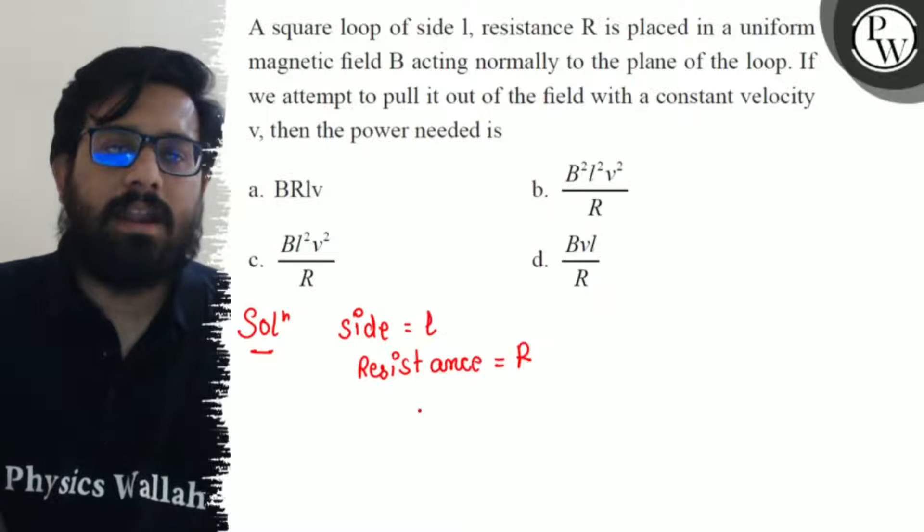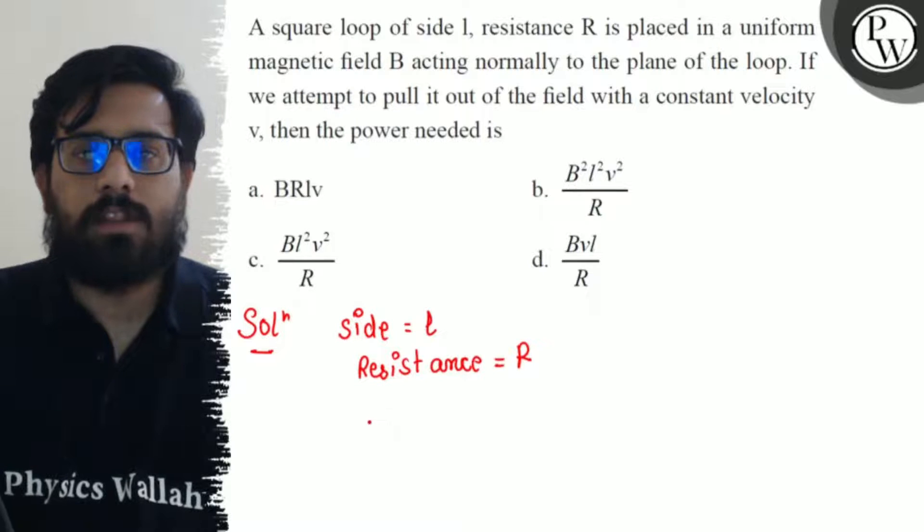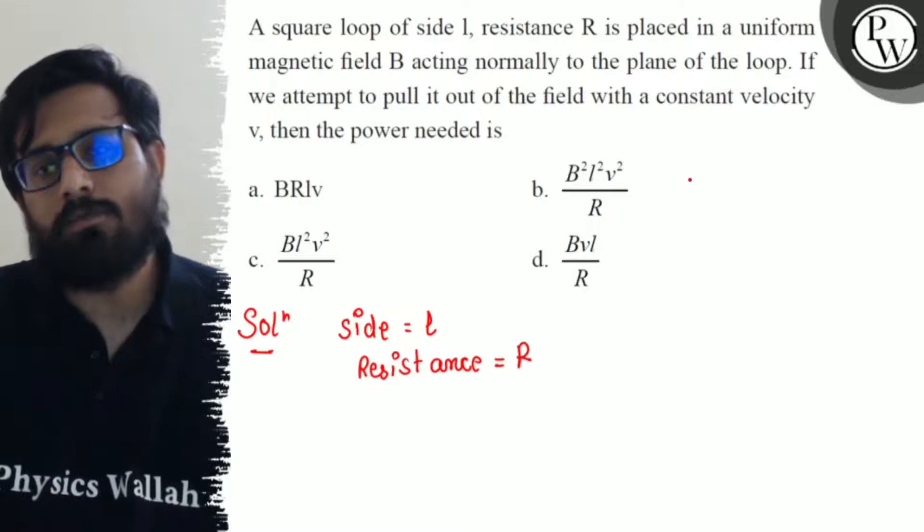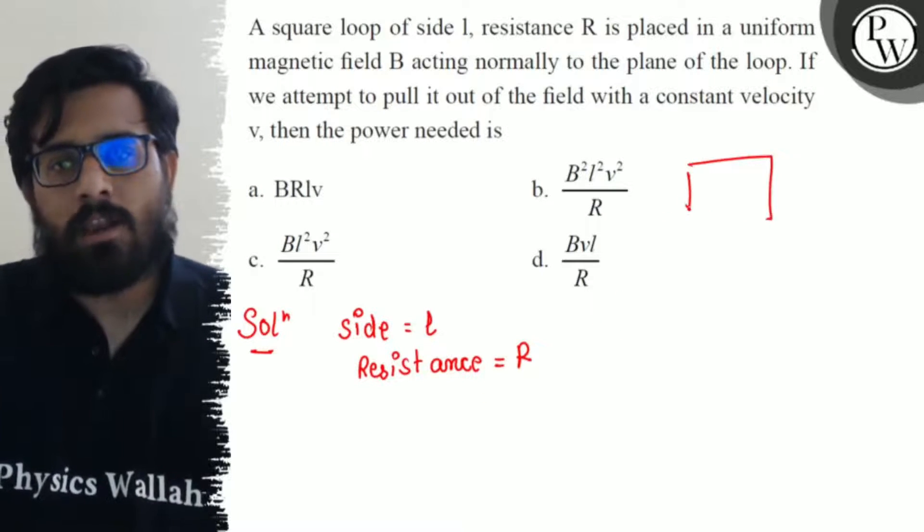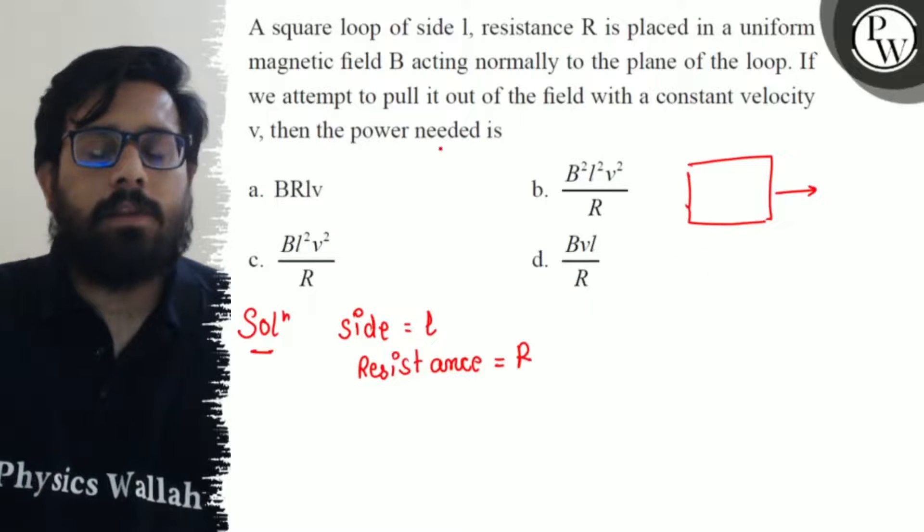And it is in a uniform magnetic field B acting normally to the plane. If we attempt to pull it out of the field with a constant velocity, we just want to pull the square loop out of the field, what will be the power which is needed.